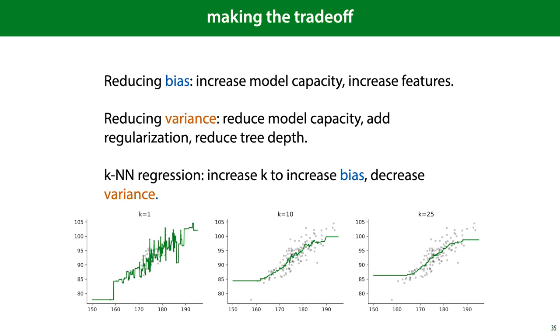Reducing variance is essentially the same as reducing overfitting, and this can be achieved by reducing your model capacity, adding regularization, which we'll talk about in a later lecture, or in specific cases, tuning parameters, like the maximum depth of the trees that you're considering. In many models, like K-NN regression, there is a hyperparameter that specifically allows you to make this trade-off. In this case, we can increase K to increase the bias and decrease the variance.